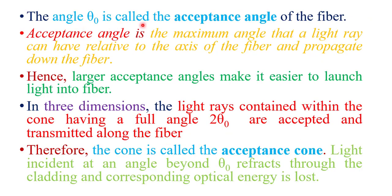Theta naught is called the acceptance angle of the fiber — the maximum angle that a light ray can have relative to the axis of the fiber and propagate down the fiber. A large acceptance angle makes it easier to launch light into the fiber. In three-dimensional view, light rays contained within a cone having full angle 2×theta naught are accepted and transmitted along the fiber — this cone is called the acceptance cone. Light incident beyond theta naught refracts through the cladding and the optical energy is lost.